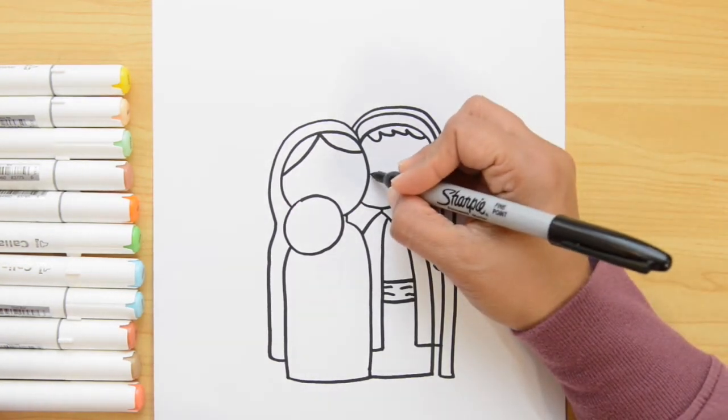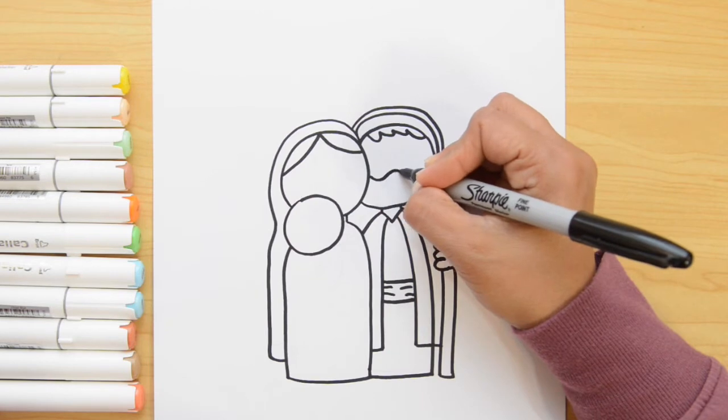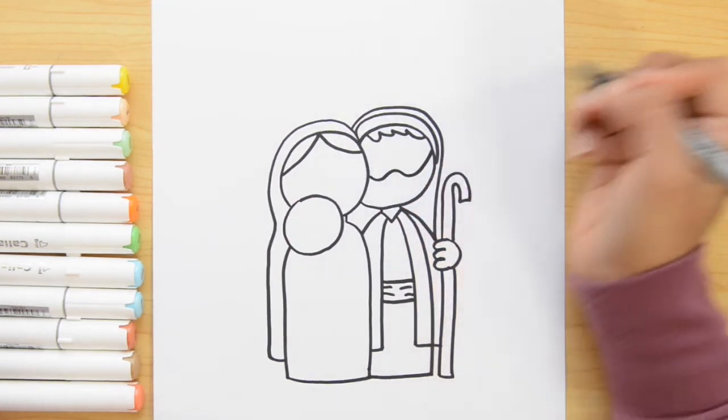And Joseph's here is gonna be just letter U. They go together. Now let's do the beard. We're gonna go down, up, down and up again. There!